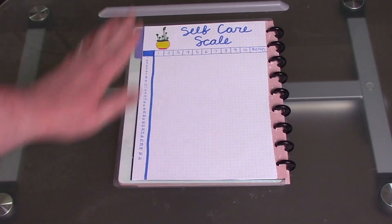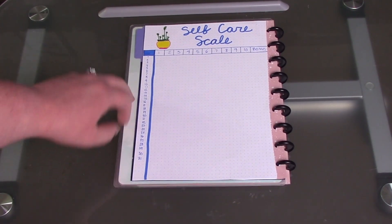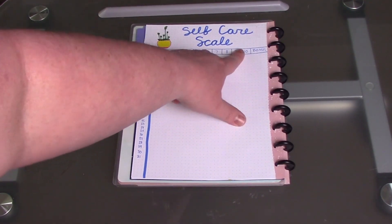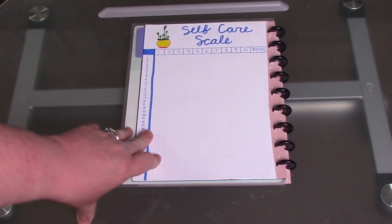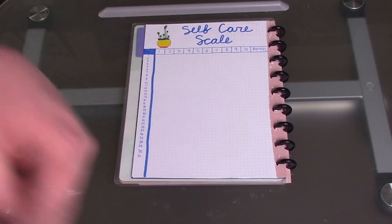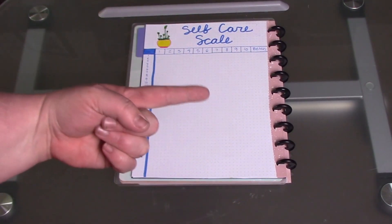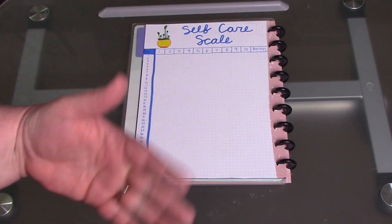And then the last thing that I'm going to be tracking regularly for the month is my self-care scale. My goal is to do 10 things a day in regards to my self-care, whether that's eating proper meals - all three meals - or eating well for the day.